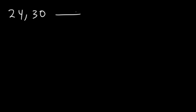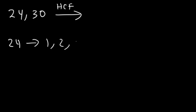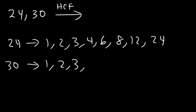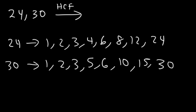Now let's try another example. What is the HCF of 24 and 30? Factors of 24 are 1, 2, 3, 4, 6, 8, 12, and 24. Factors of 30 are 1, 2, 3, 5, 6, 10, 15, and 30. Note that 4, 7, 8, and 9 cannot go into 30. The highest common factor in both lists is 6. So the HCF of 24 and 30 is 6.